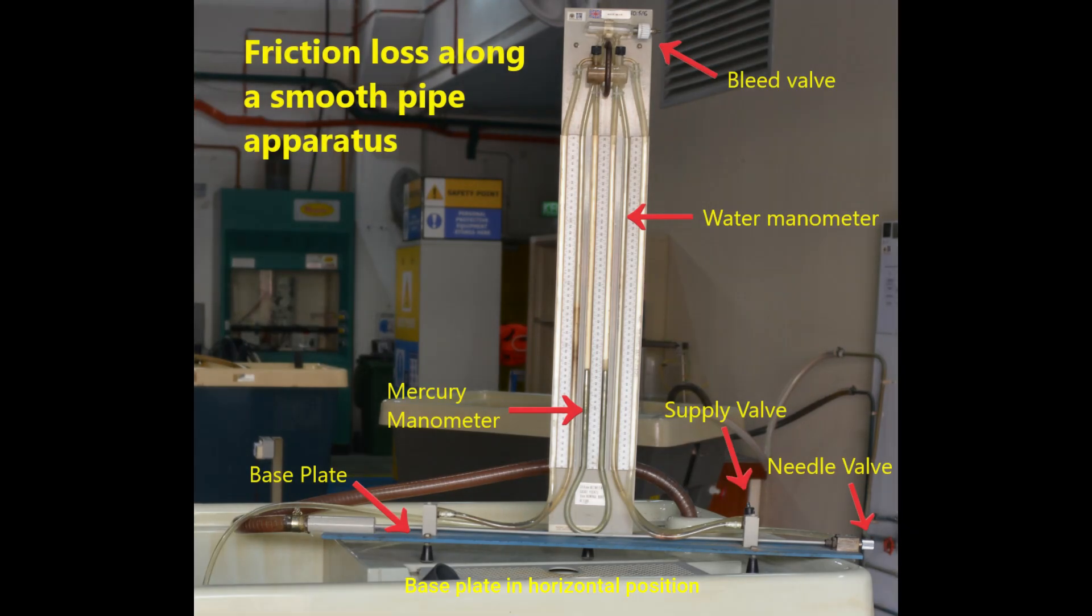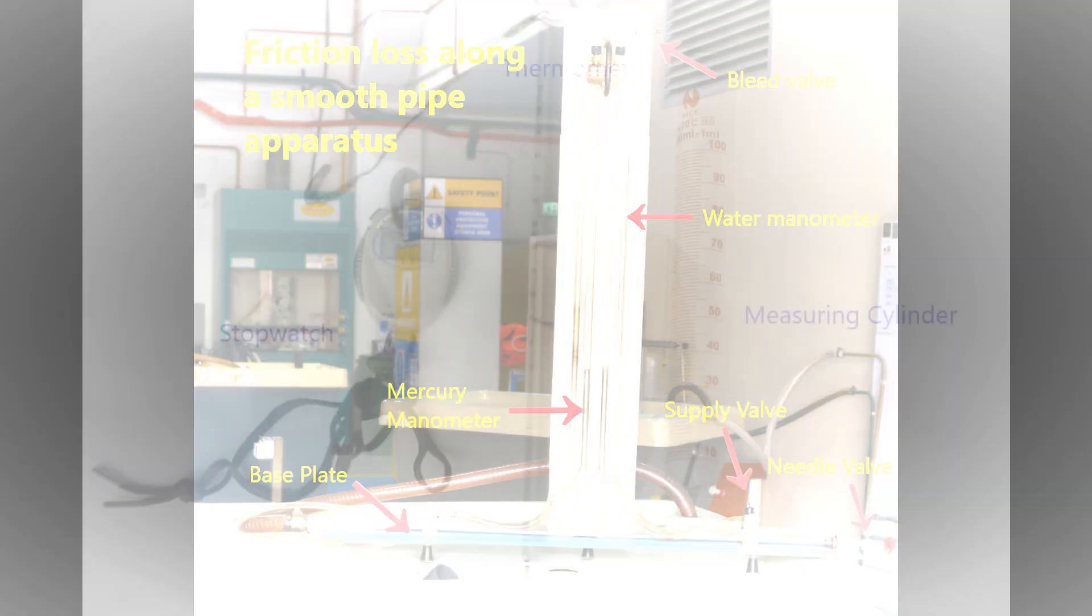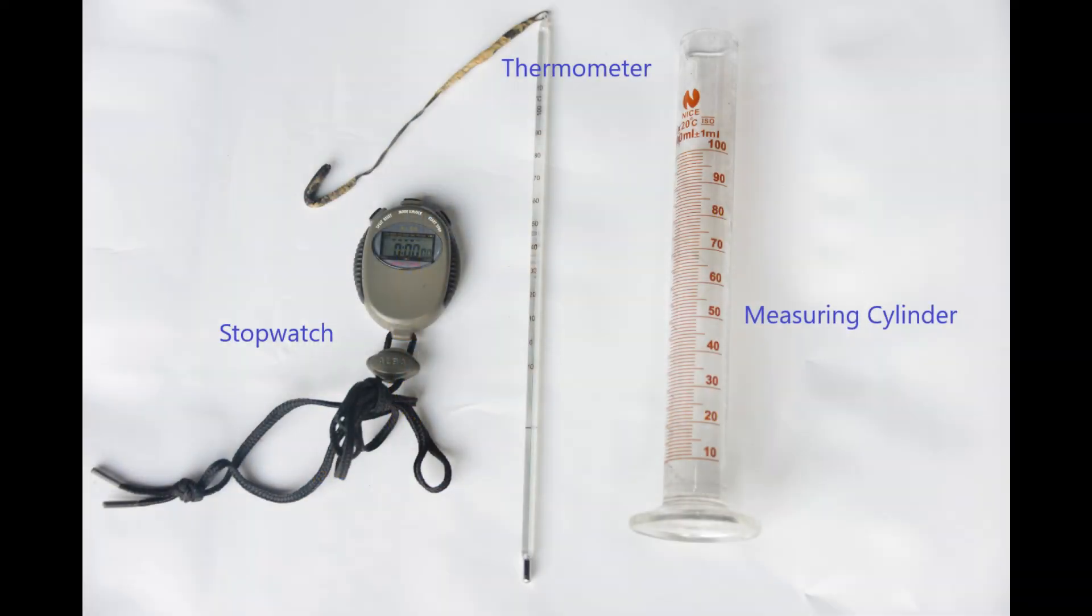This is the apparatus required for the experiments. We have the hydraulic bench attached with water and mercury manometer, base plate in the horizontal position, stopwatch, thermometer and measuring cylinder.